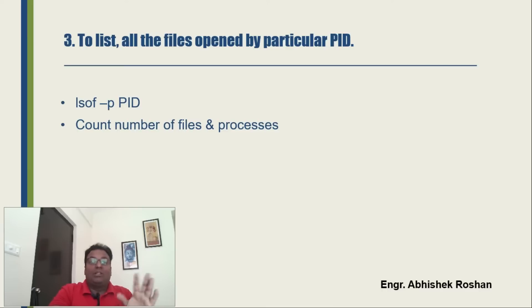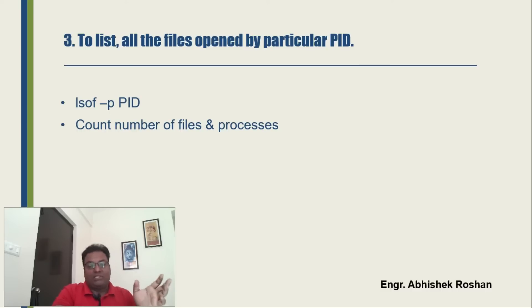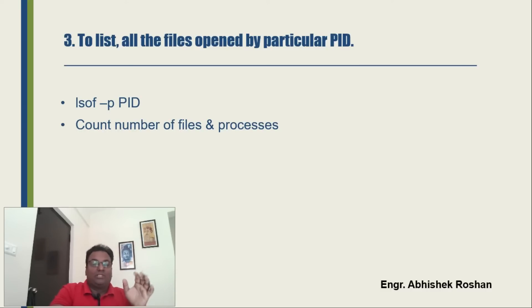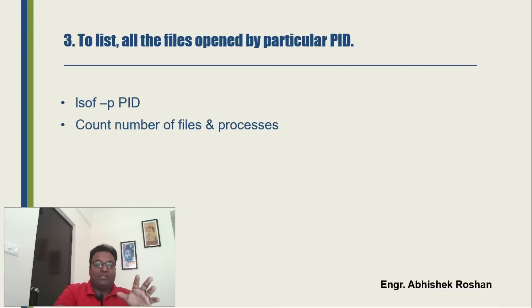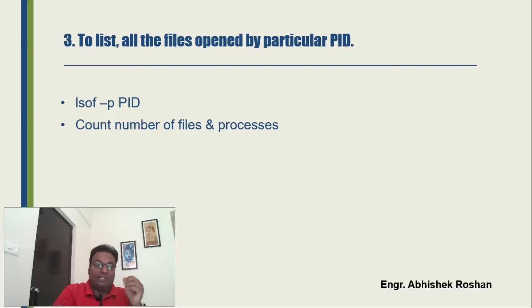The next question: how to list all open files by a particular PID (process ID). The command is `lsof` — list of open files — with `lsof -p <pid>`. This lists all processes along with the files they have open. You can also use this command to count the number of files and processes.